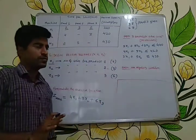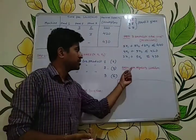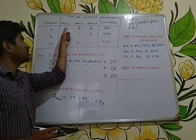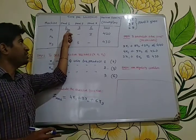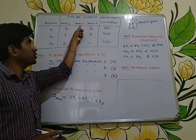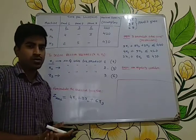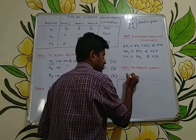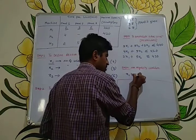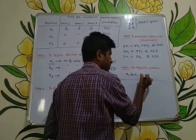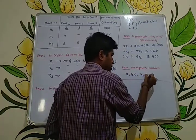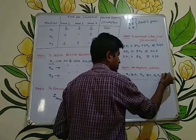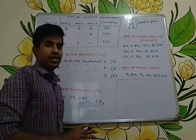These are the restrictions. The last step is the non-negativity condition. Since we are manufacturing products, the quantities must be more than or equal to zero. So x1 ≥ 0, x2 ≥ 0, and x3 ≥ 0. This is the non-negativity condition.